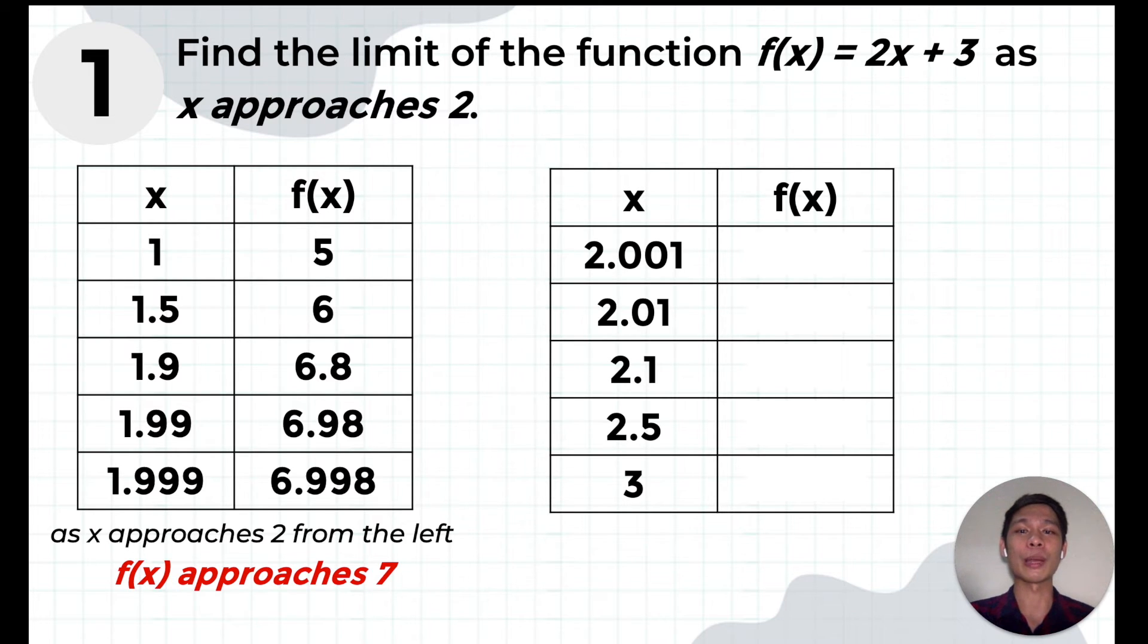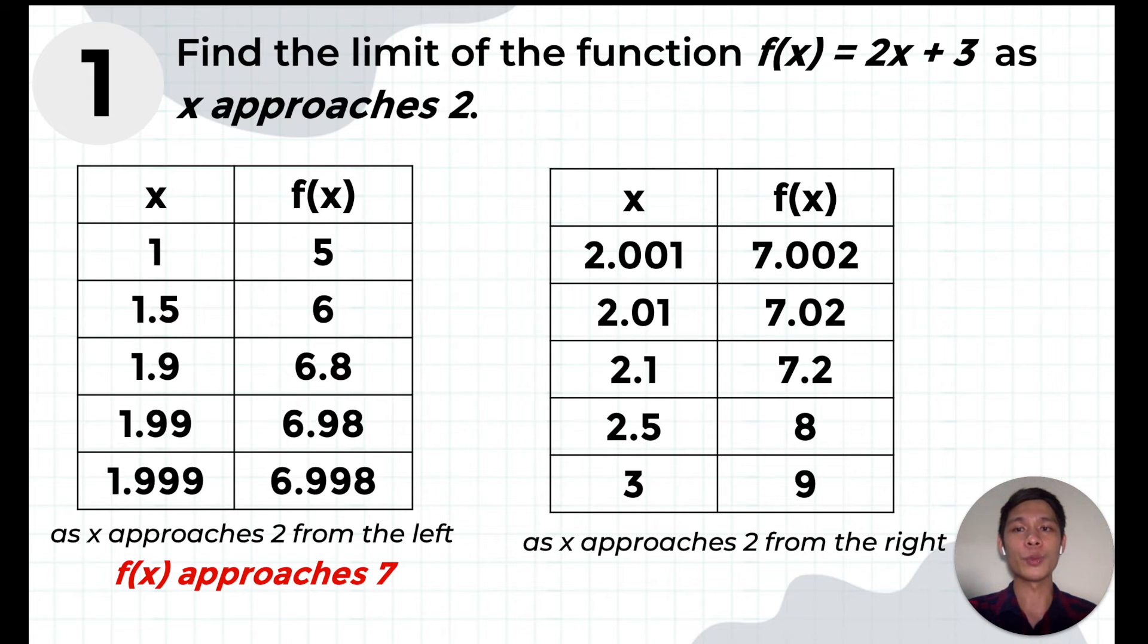Now, we'll do the same process for the table on the right by evaluating the function at the given values of X starting from bottom to top. Now, we can see that if X is equal to 3, f(x) is equal to 9. If X is equal to 2.5 then f(x) would be equivalent to 8, and so on until we get X is equal to 2.001 and f(2.001) is 7.002. Observing the values of f(x) from the bottom to top, we arrive at the same observation that f(x) approaches 7. Meaning, as X gets closer and closer to 2 from the right, f(x) gets closer and closer to 7. So we can conclude that the limit of the function 2X plus 3 as X approaches 2 is 7.